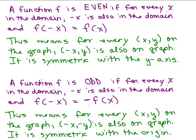You get the opposite value of the function. So this means that for every ordered pair (x, y) on the graph, there's another ordered pair (negative x, negative y) that's also on the graph, and this means it's symmetric with the origin.